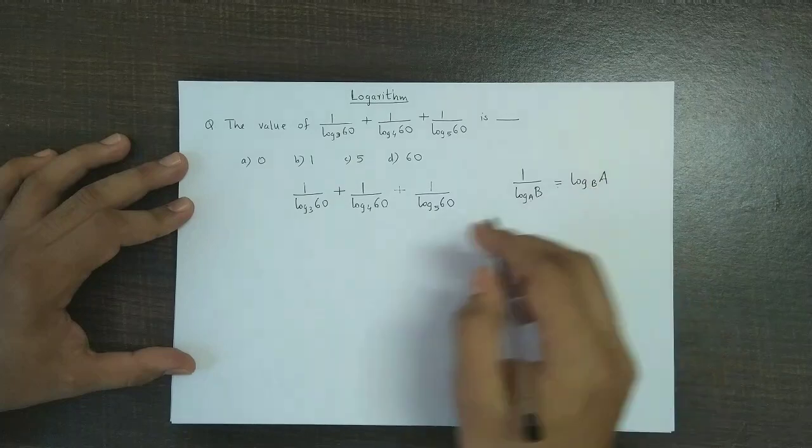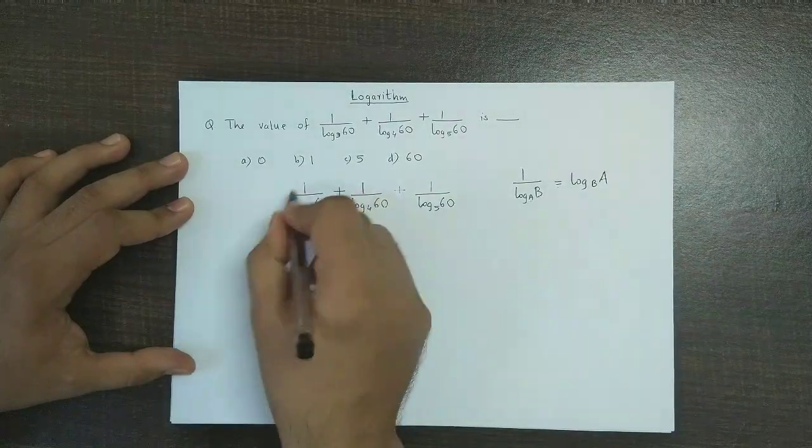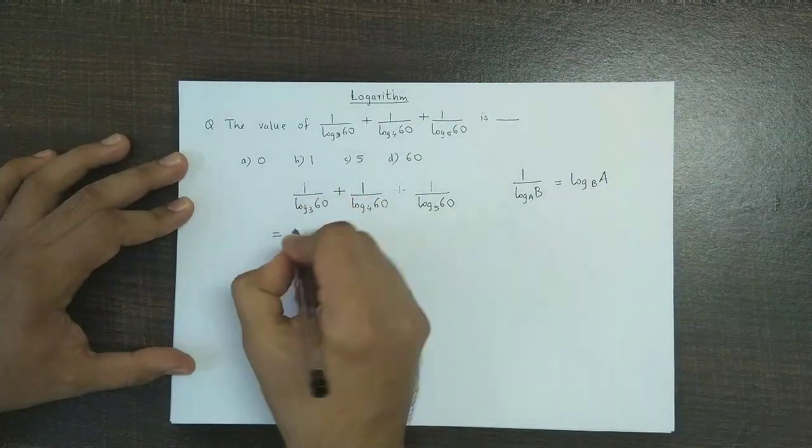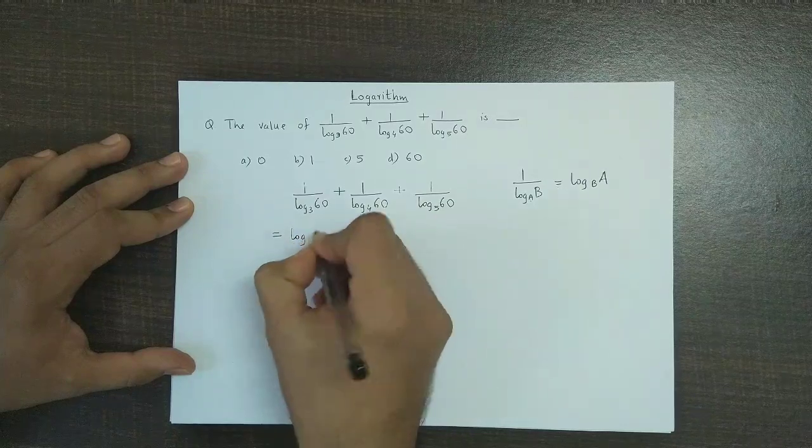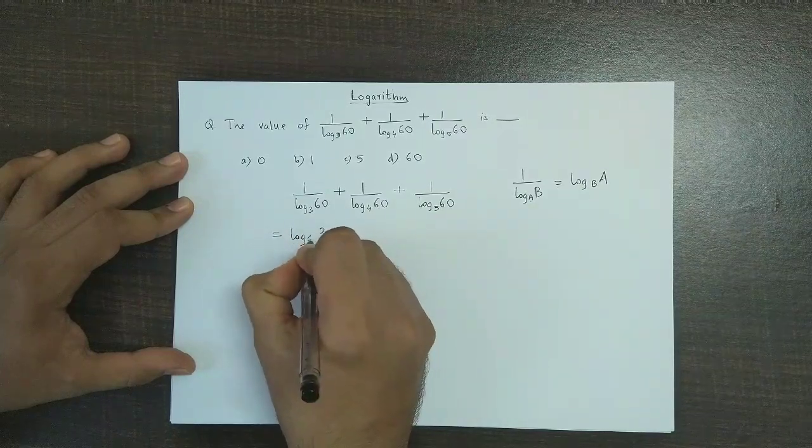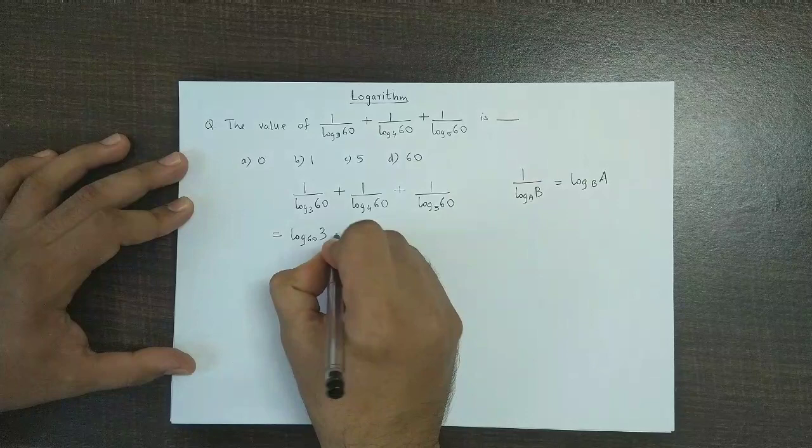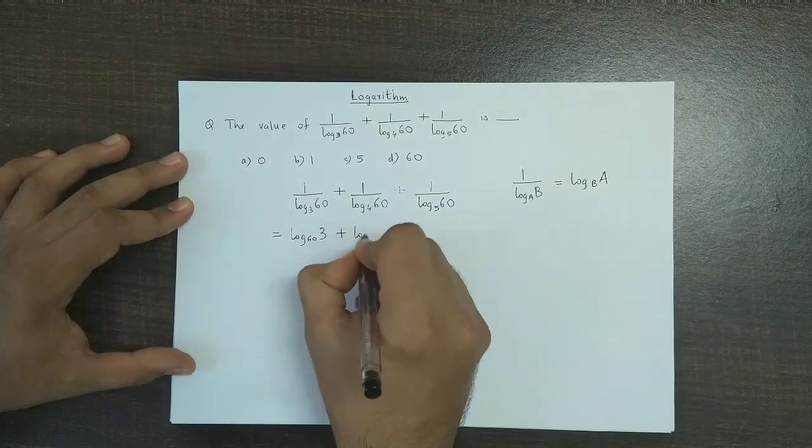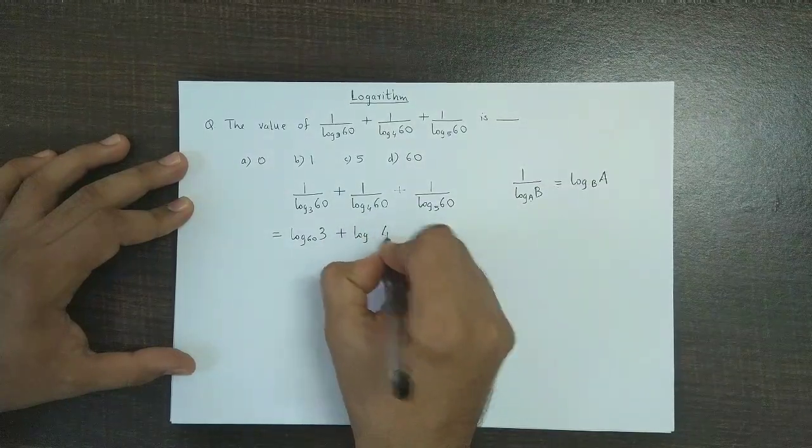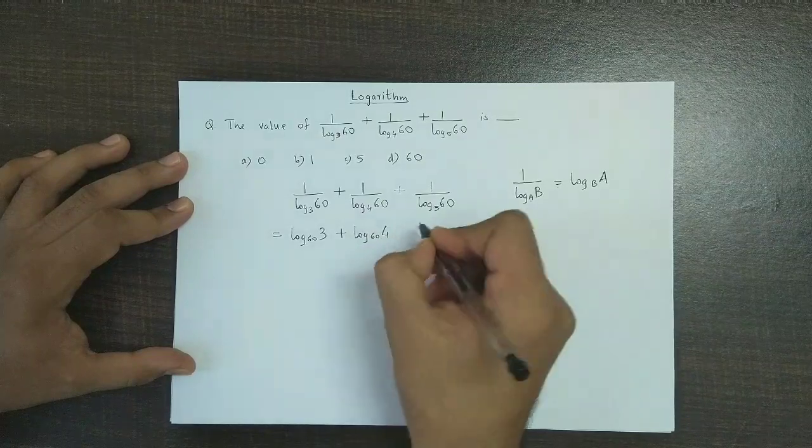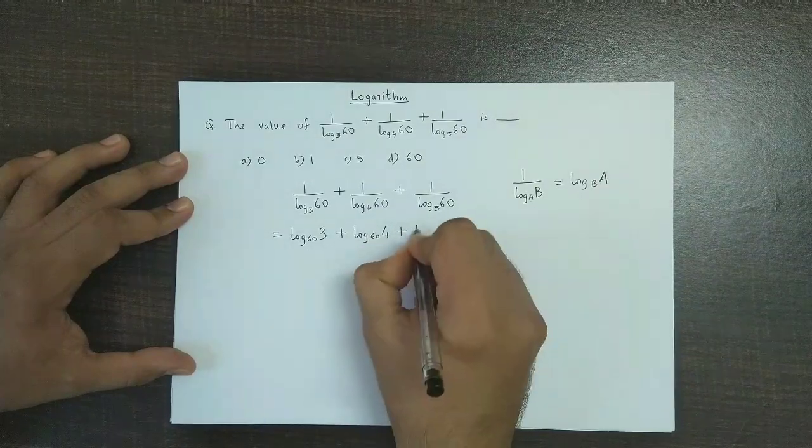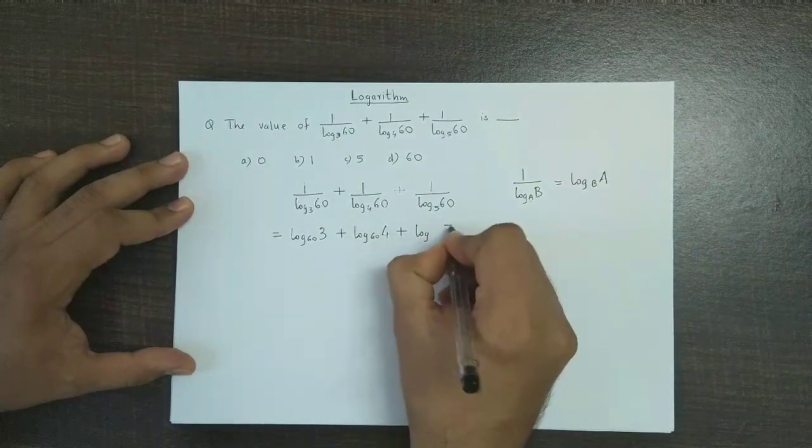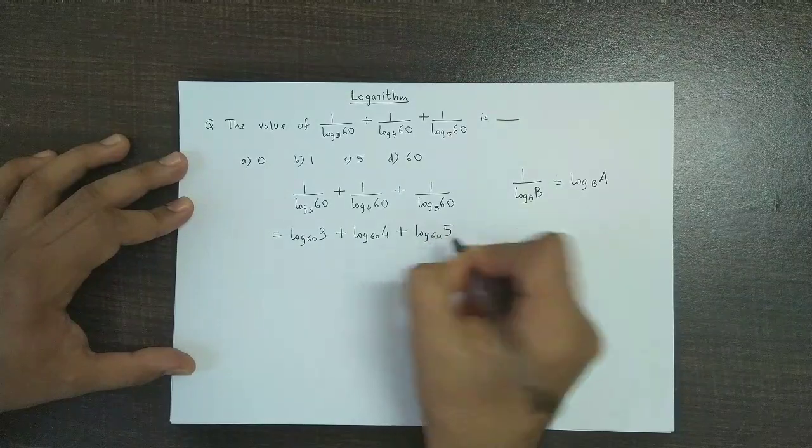So using this property, the first part could be written as log of 3 to the base 60 plus log 4 to the base 60 plus log 5 to the base 60.